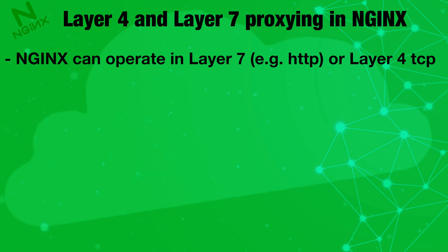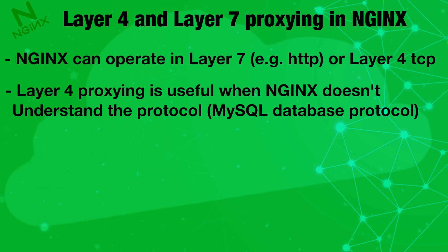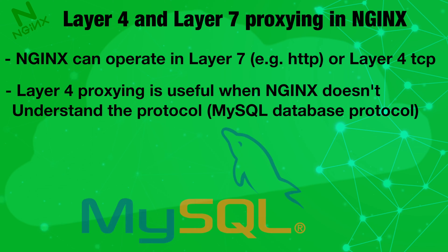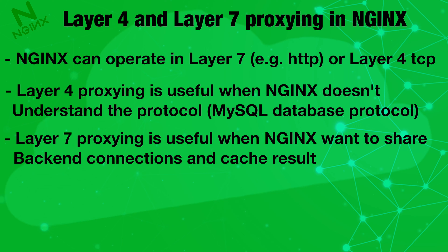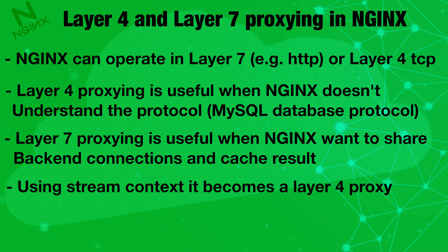nginx can operate at layer 7 with HTTP or at layer 4 as TCP. A layer 4 proxy is useful when nginx doesn't understand the protocol — for example, if the request is for a MySQL database connection, it just forwards whatever the request is to the corresponding database. A layer 7 proxy is useful when nginx wants to share backend connections, cache results, add headers, or redirect requests.